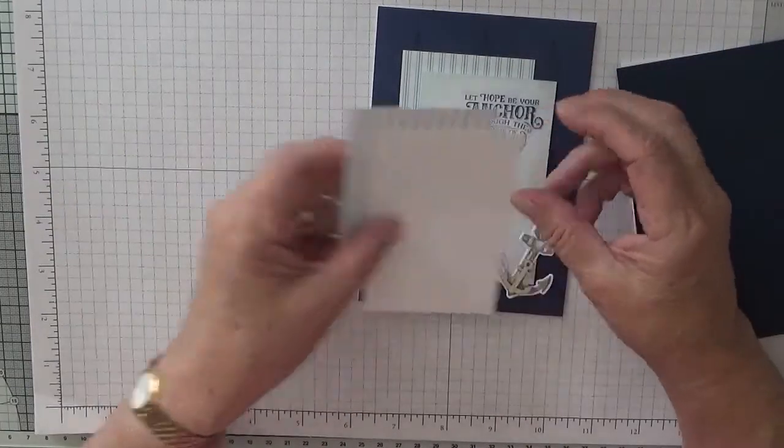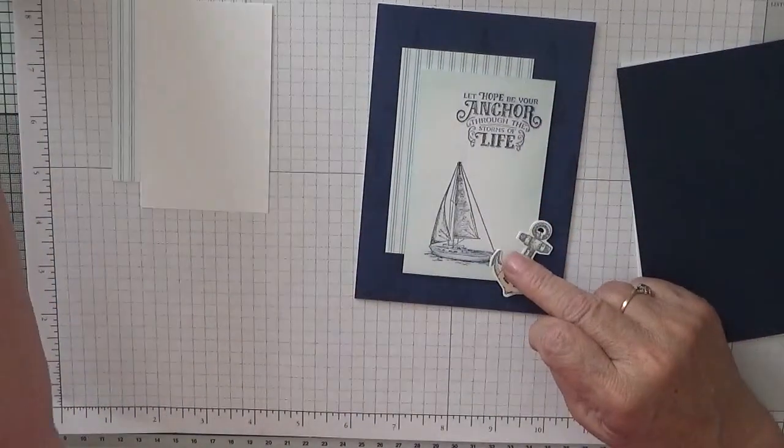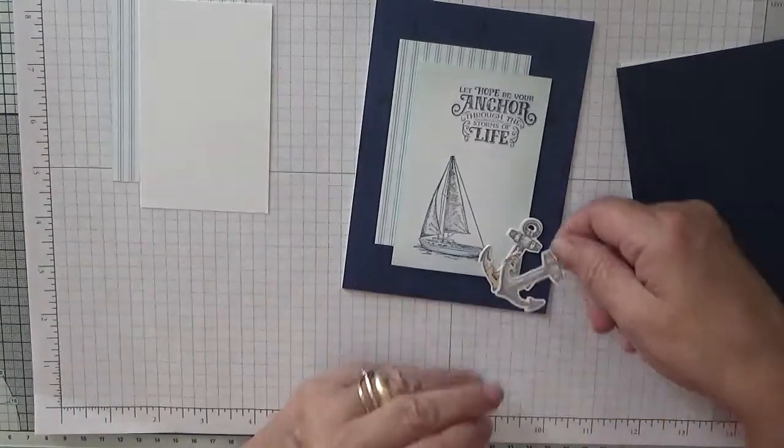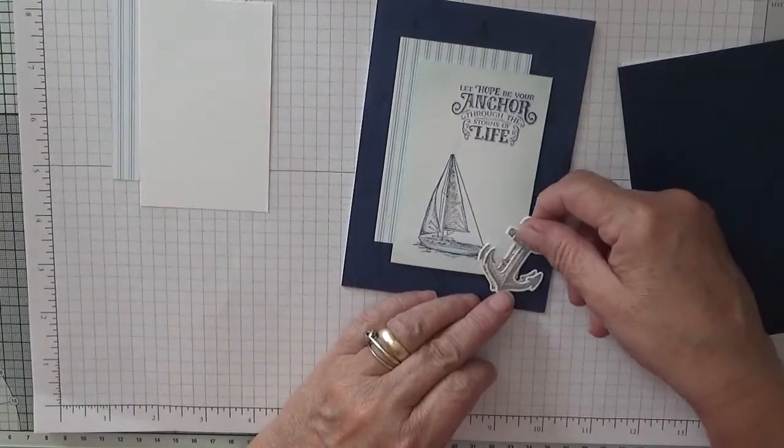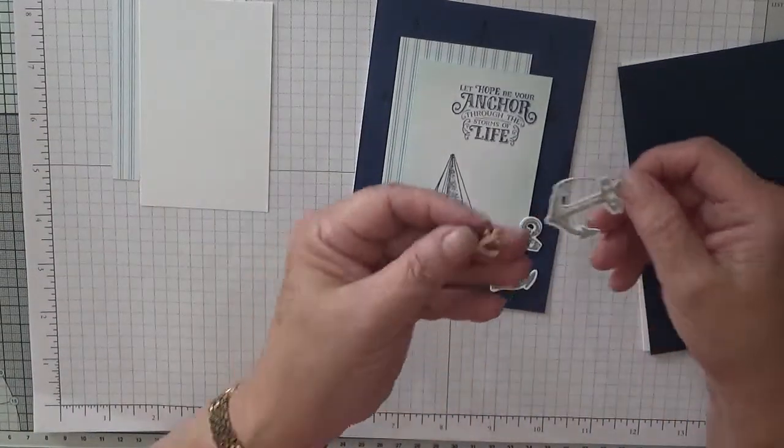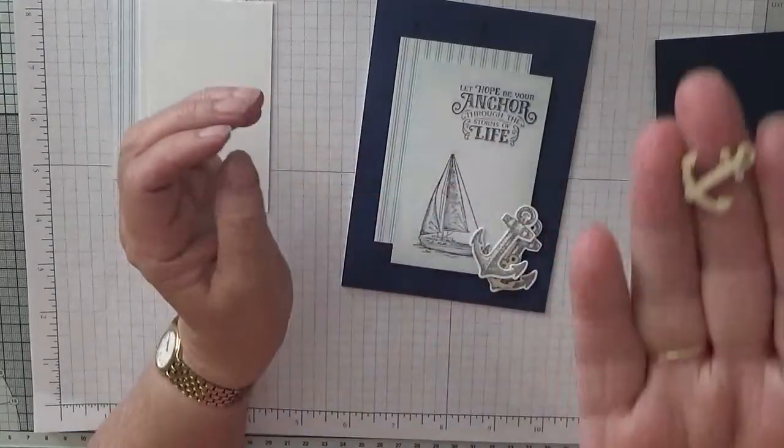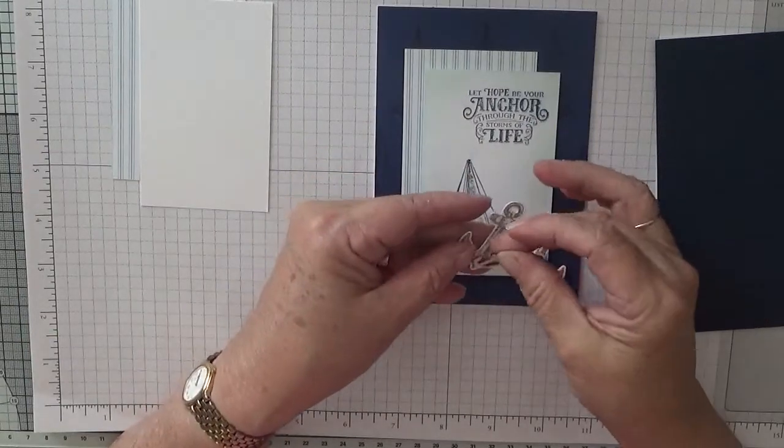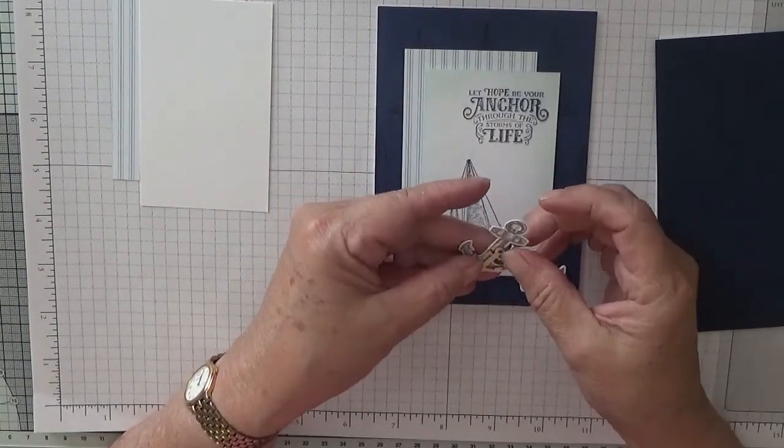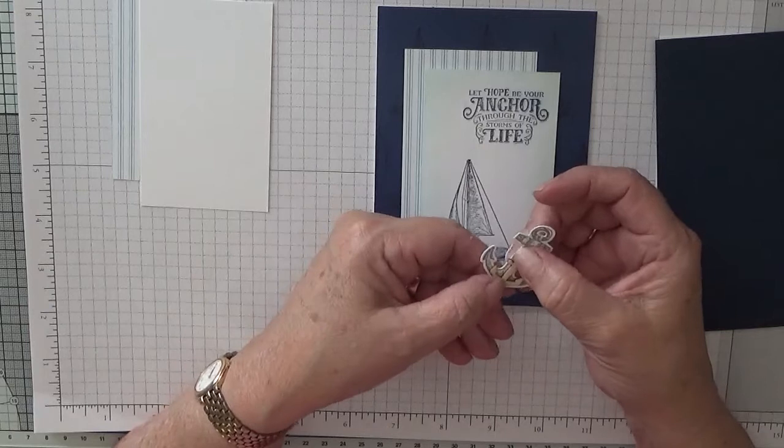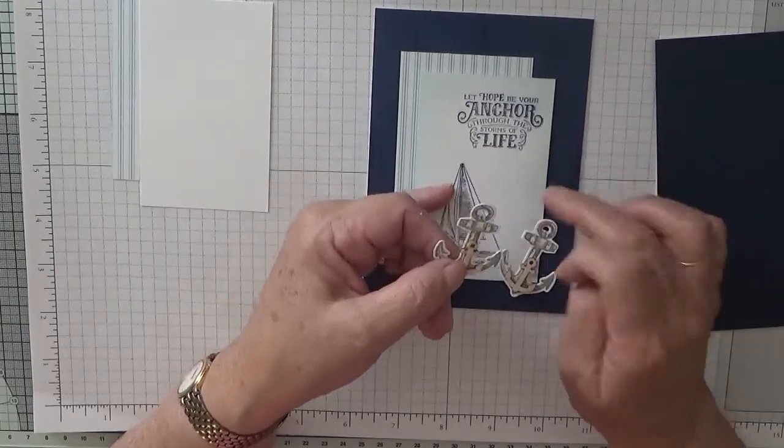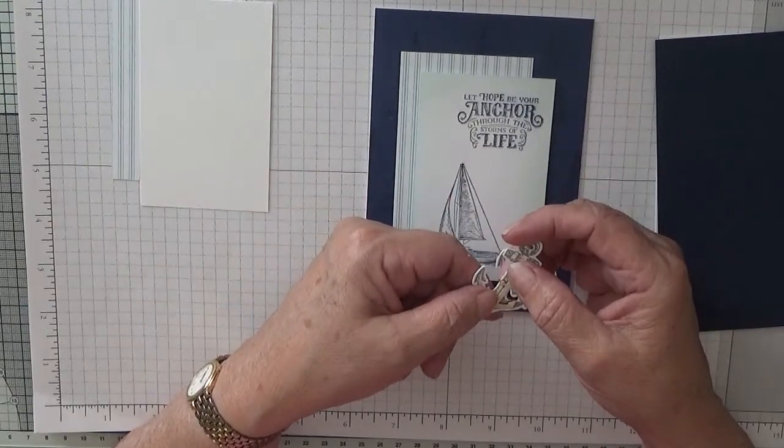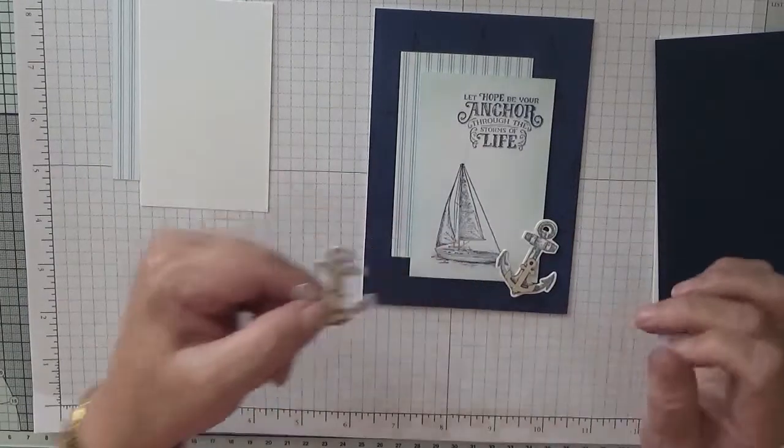So that's what I've got. I've also got the anchor cut out. And I did that in Smoky Slate. And I've also got this little wooden anchor that my upliner gave us this month. So I thought I'd use one.